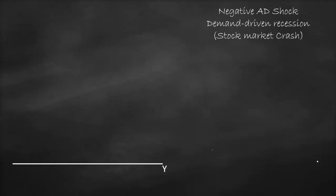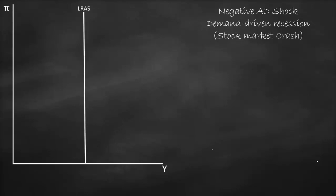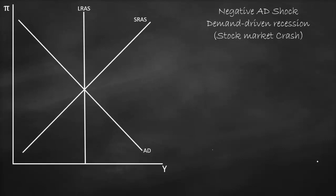Let's assume that we have a negative aggregate demand shock — a demand-driven recession such as a stock market crash. Let's draw our aggregate demand, short-run aggregate supply, and long-run aggregate supply curves. On the x-axis we have output, on the y-axis we have inflation or price index. This is our vertical long-run aggregate supply curve, our upward-sloping short-run aggregate supply curve, and our downward-sloping aggregate demand curve.